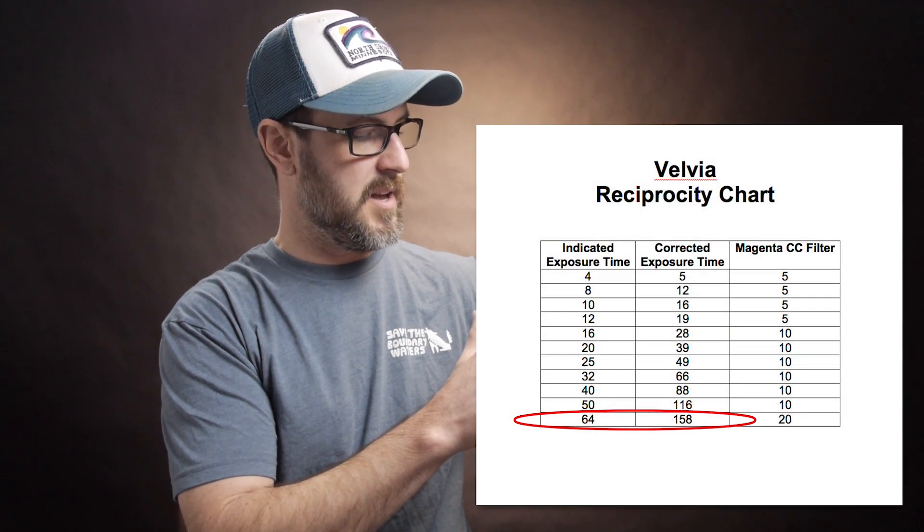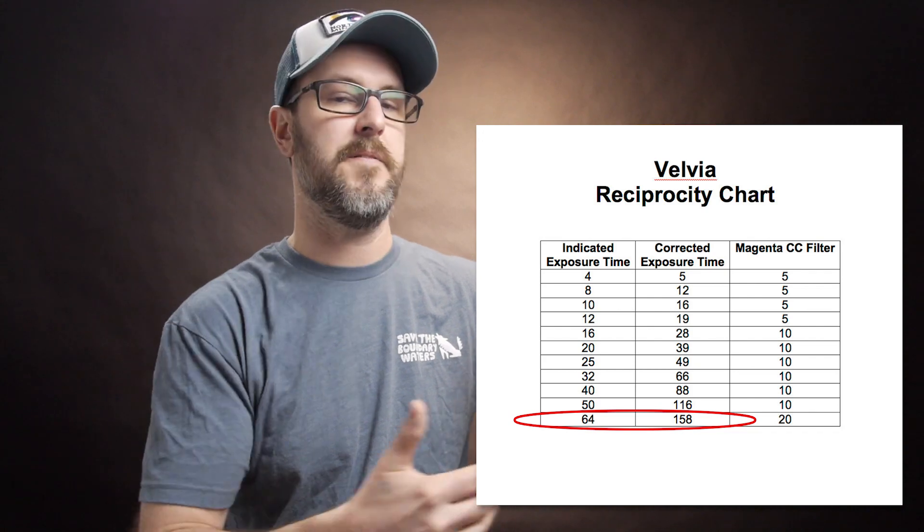If we jump down to almost a minute — 64 seconds — we need 158 seconds to correctly expose that film. So we've more than doubled it, adding another half on top. As you can imagine, there's going to be a point where you hit a wall and the film just won't respond well. It's really recommended that you don't go over an exposure that's 4 to 5 minutes long. You can experiment beyond that if you're looking for star trails at night, but it may not be the right film. I'll put a link in the description to some of these charts, or just do a Google search for reciprocity failure of Fuji Velvia, Kodak Ektar, Portra, or whatever you're shooting with.